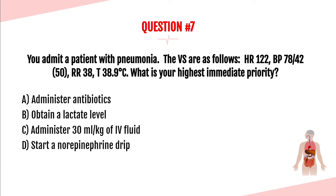Question number seven. You admit a patient with pneumonia. Vital signs: heart rate 122, blood pressure 78 over 42 with a MAP of 50, respiratory rate of 38, and temperature of 38.9 degrees Celsius. What is your highest immediate priority? Is it A, administer antibiotics; B, obtain a lactate level; C, administer 30 mL/kg of IV fluid; or D, start norepinephrine?